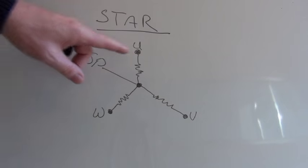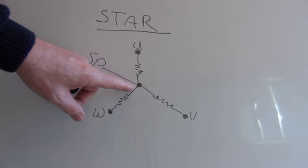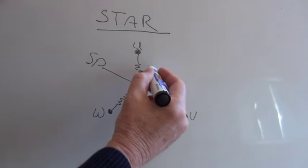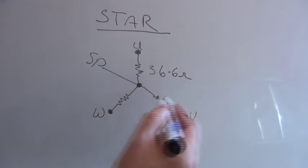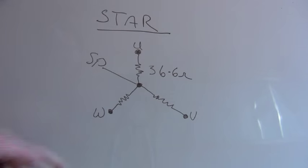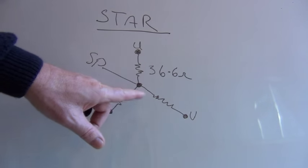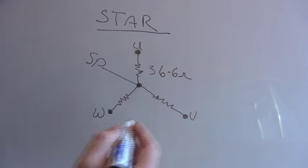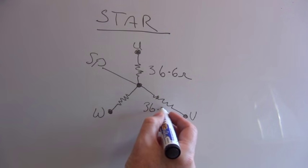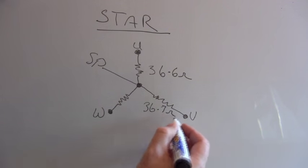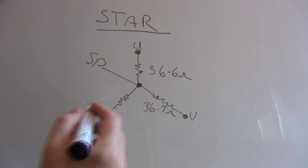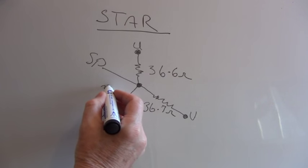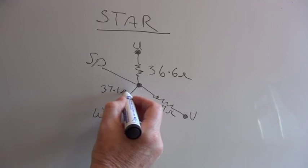The first reading we took was between U and the star point, and we obtained 36.6 ohms. The next reading we took was between V and the star point, and we obtained 36.7 ohms. The next reading we took was between W and the star point, and we obtained 37.1 ohms.